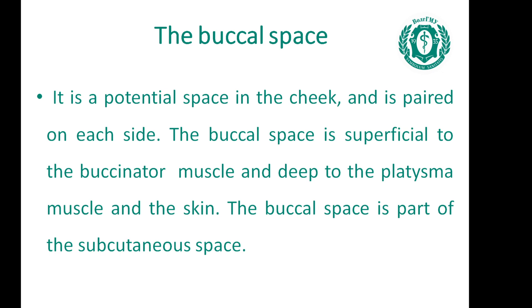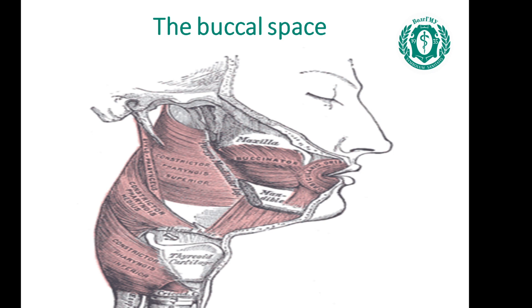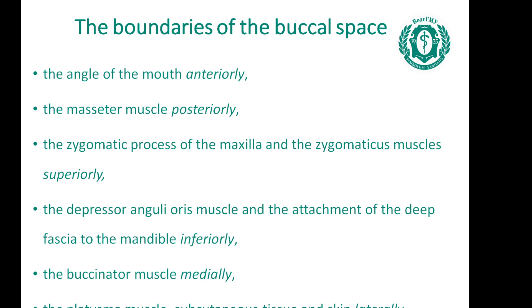The buccal space is a potential space in the cheek and is paired on each side. It is superficial to the buccinator muscle and deep to the platysma muscle and the skin. The buccal space is part of the subcutaneous space. Its boundaries are: the angle of the mouth anteriorly, the masseter muscle posteriorly, the zygomatic process of the maxilla and the zygomaticus muscle superiorly, the depressor anguli oris muscle and the attachment of the deep fascia to the mandible inferiorly, the buccinator muscle medially, and the platysma muscle, subcutaneous tissue and skin laterally.